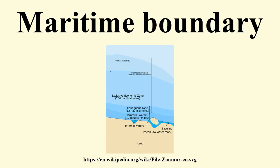Inland waters are the zone inside the baseline. The territorial sea is the zone extending 12 nautical miles from the baseline. The contiguous zone is the area extending 24 nautical miles from the baseline. The exclusive economic zone is the area extending 200 nautical miles from the baseline, except where the space between two countries is less than 400 nautical miles. In the case of overlapping zones, the boundary is presumed to conform to the equidistance principle or is explicitly described in a multilateral treaty.